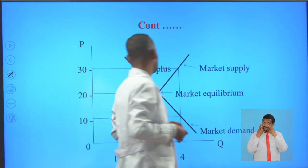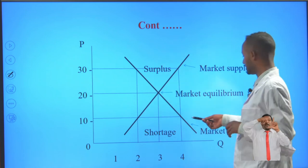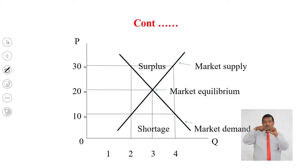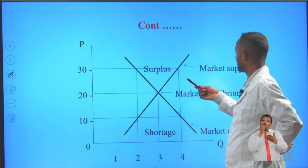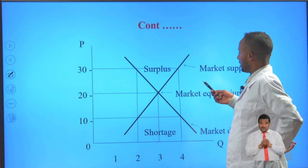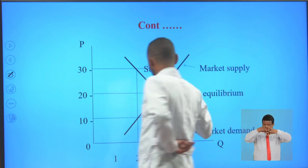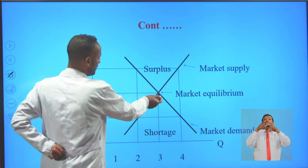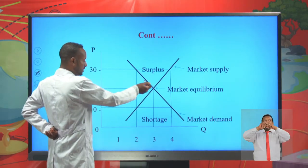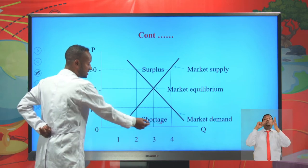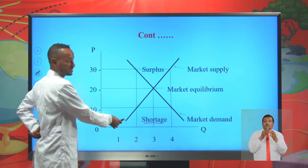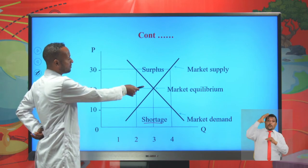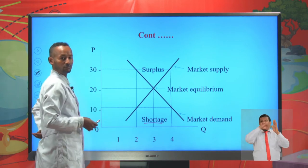Now let's see market equilibrium on a graph. This is the market demand curve, derived from the theory of demand, and this is the market supply curve, derived from the theory of supply. When we combine these curves together, we get this graph and this is the equilibrium point. Any point below the equilibrium point represents shortage or excess demand — that means market demand is greater than market supply. Any point above the equilibrium point represents excess supply or surplus.